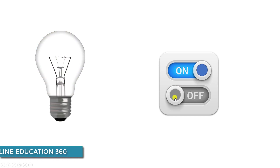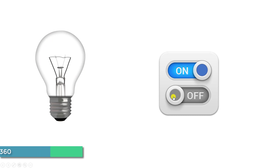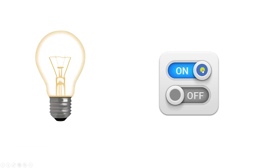Today we are going to show you how to make a beautiful on/off animation in Microsoft PowerPoint. If I click on the on button, the bulb will be on. If I click on the off button, the bulb will be off.